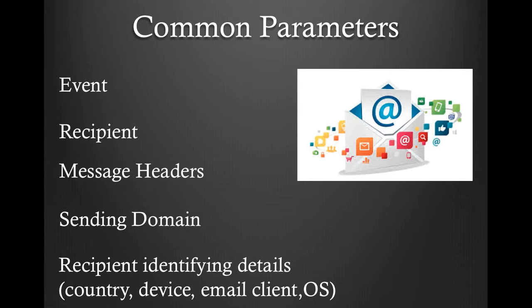Email delivery events will contain data about the status of the SMTP session, like an error code for the bounced event and other useful data about the status of the email. Recipient engagement events will contain data like the country the message was opened in, the device that clicked the link, and the email client or operating system used. All of these parameters can be found in our documentation, and you should definitely review it when determining what you're interested in tracking.